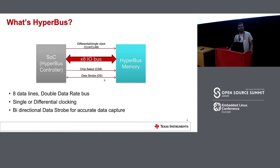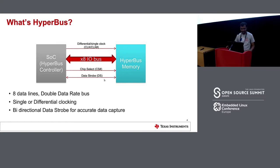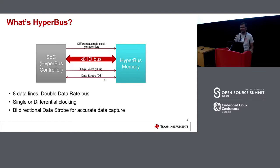So what is HyperBus? HyperBus is a serial bus — nowadays serial buses have multiple lines. It's a high-speed bus connecting a HyperBus memory device to the SOC or the controller. It has exactly eight data lines but works in double data rate, meaning data is transferred on both the rising and falling edge of the clock.